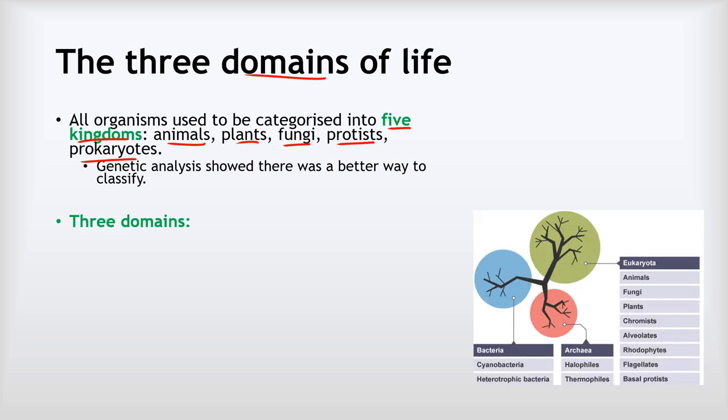We came up with this model called the three domains model of living things. According to this, there are three domains of life, three major groups of types of living things. Group number one is called Eukaryota, and that includes us. The Eukaryota domain includes animals, plants, fungi, but also protists and quite a lot of other different types of organisms. A lot of those are single-celled things that I'm not familiar with and I imagine you wouldn't be either.